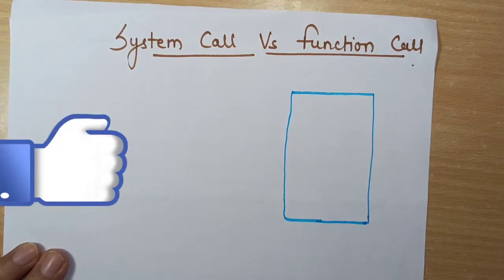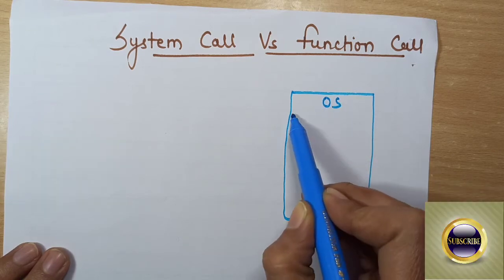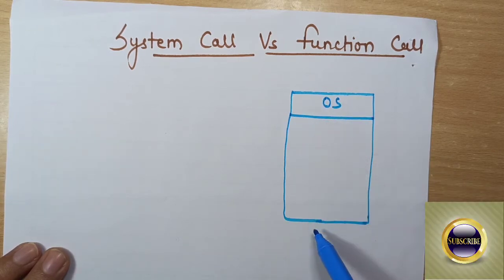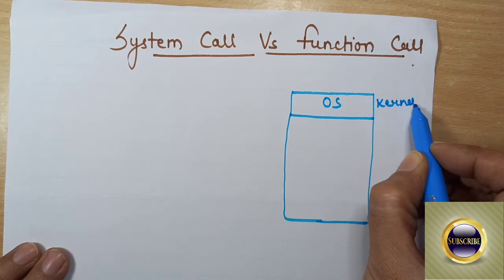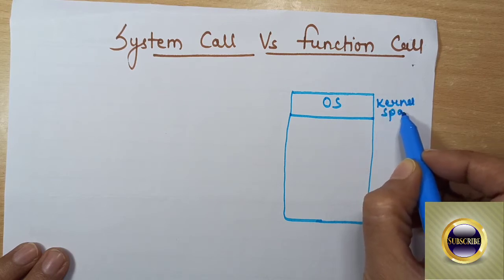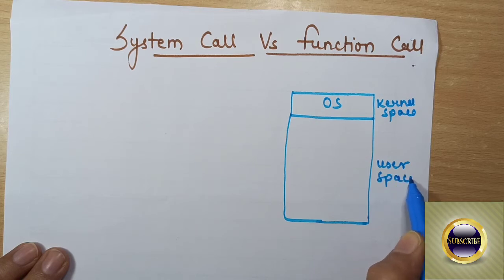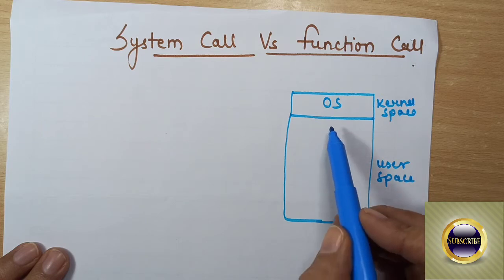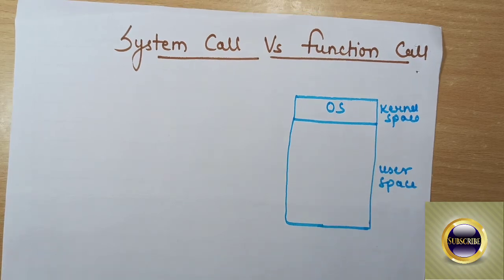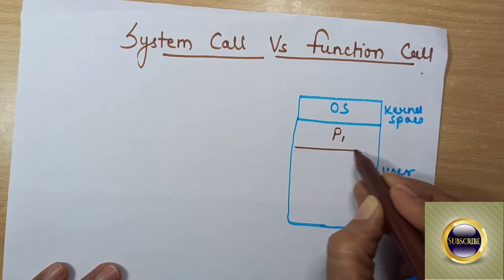In our RAM we have the operating system loaded, and the other space is the user space. This area is the kernel space and this is the user space.